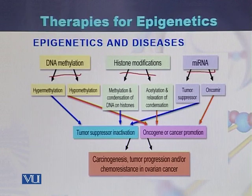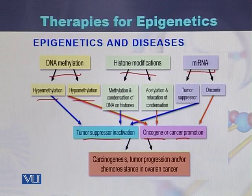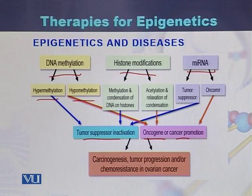In case of DNA methylation, there can be hypermethylation and hypomethylation, which are responsible for oncogenes or cancer promotion, while hypermethylation is also responsible for tumor suppressor inactivation. Similarly, in case of histone modifications, methylation and acetylation enhance tumor suppressor inactivation and oncogene activity.